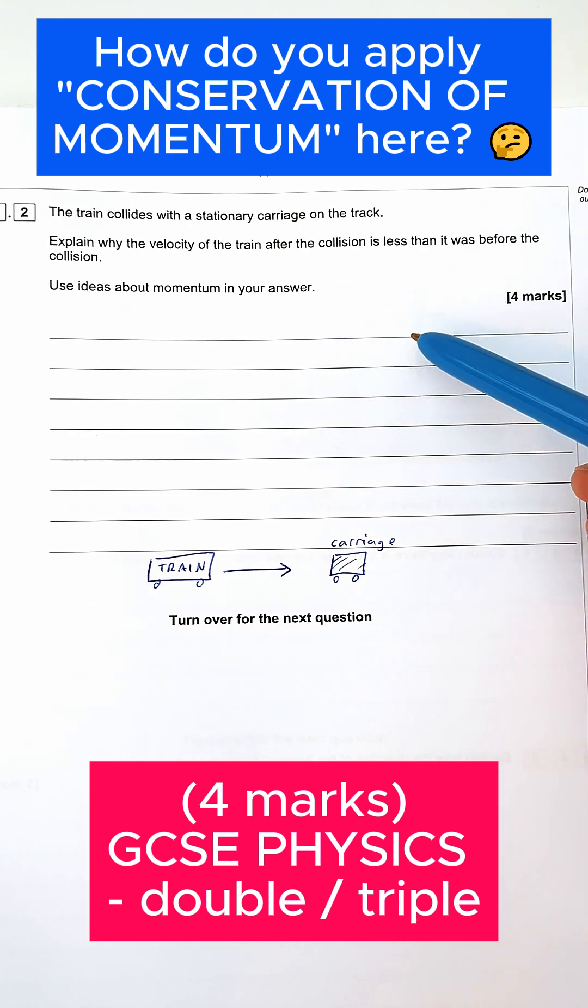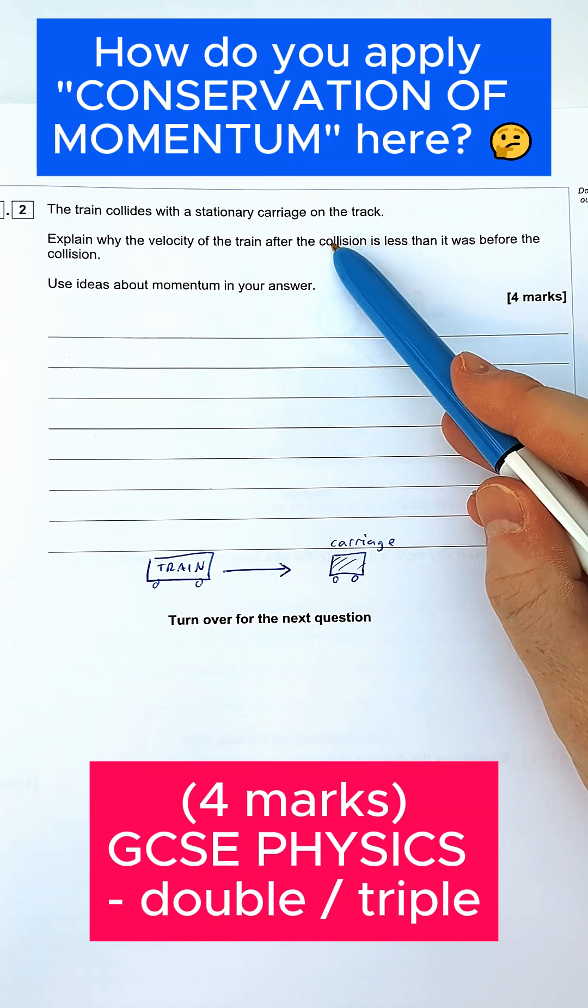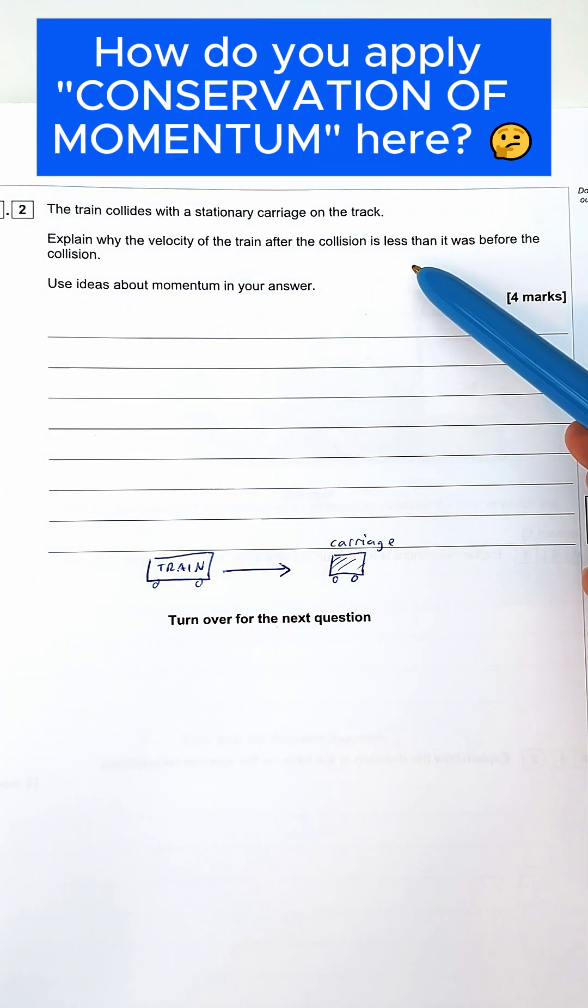Conservation of momentum questions can be some of the trickiest on paper two for combined or separate science. This question says a train collides with a stationary carriage on the track. Explain why the velocity of the train after the collision is less than it was before.